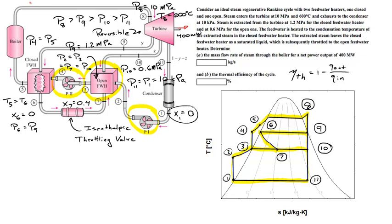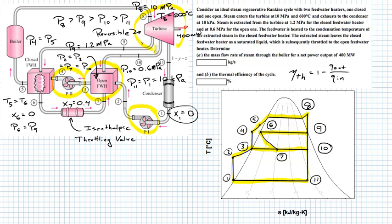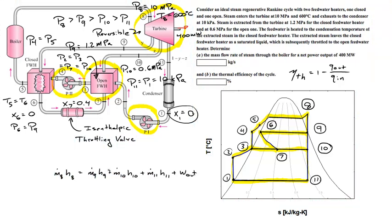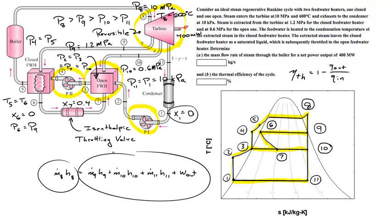Ultimately what you want to find is the mass flow rate of steam per unit power coming out of the turbine. Let's do an energy balance around the turbine. We make the adiabatic assumption — heat can't get into or out of the highlighted circle. Energy can only leave through work and through the three bleed streams, and the only way energy enters is through stream 8. So M_dot_8 times H8 equals the enthalpy leaving through the three streams plus the work leaving.